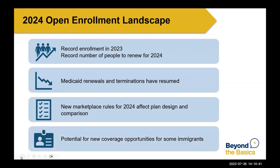HHS is expected to finalize a rule that would make Deferred Action for Childhood Arrivals (DACA) recipients newly eligible for Medicaid and premium tax credits. If finalized as proposed, an estimated 129,000 previously uninsured DACA recipients would be newly eligible for health coverage through Medicaid, CHIP, the Basic Health Program, or the ACA marketplaces.